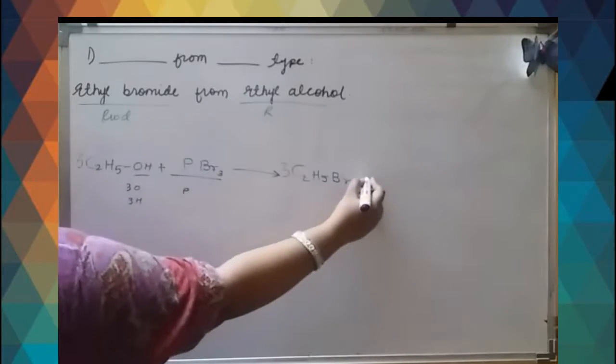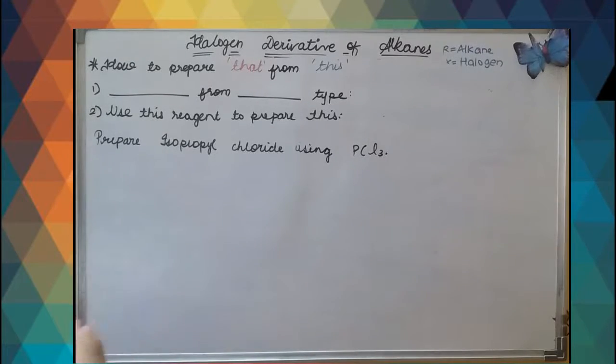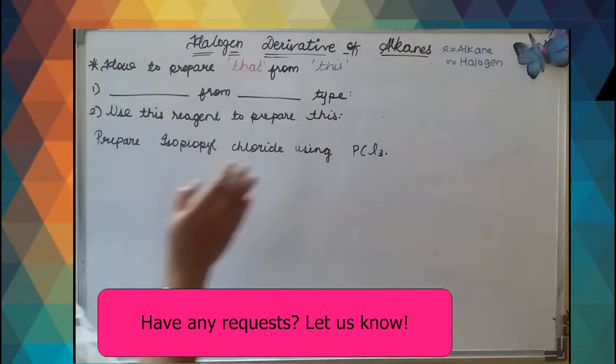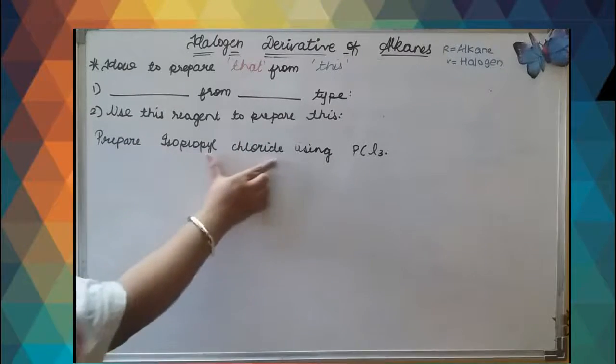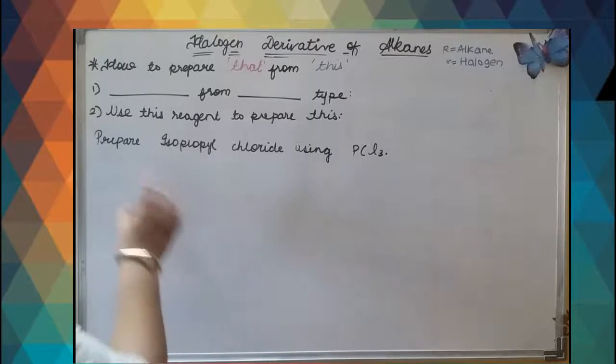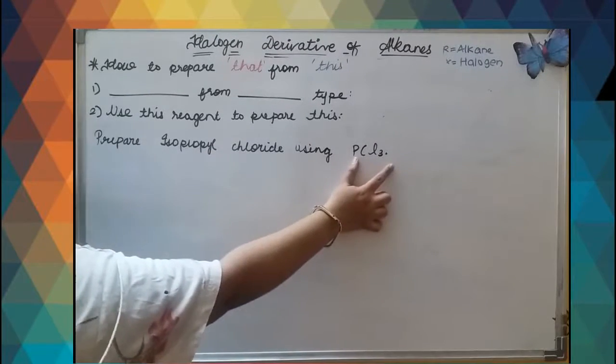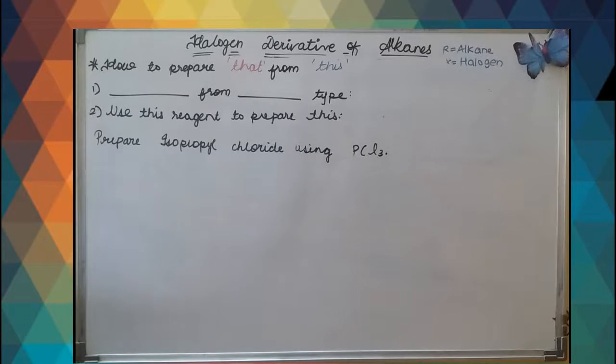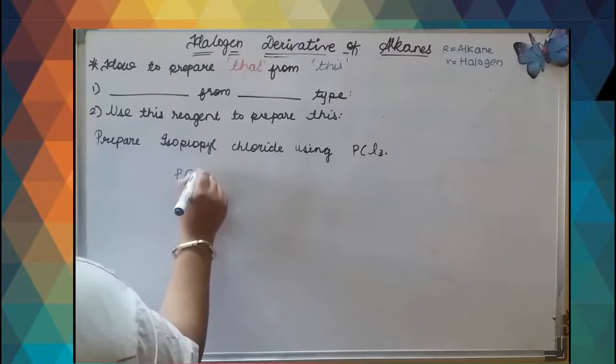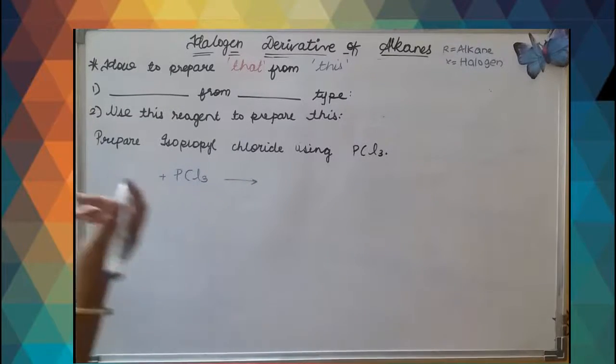This is another type of question - use this reagent to prepare this. You have to prepare isopropyl chloride using PCl3. First let us see what is reactant, what is product. You have to prepare isopropyl chloride - this is your product. Since you are given PCl3, we will write that by using PCl3 we will get isopropyl chloride.